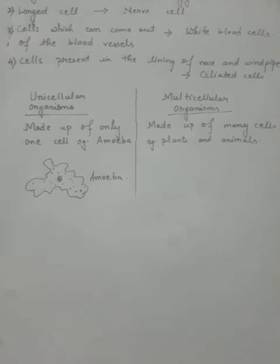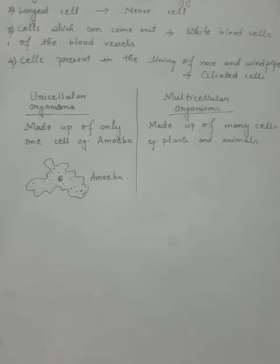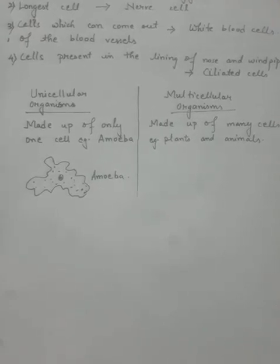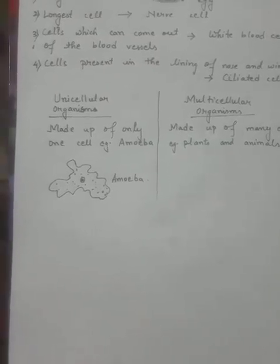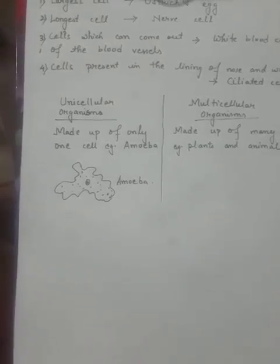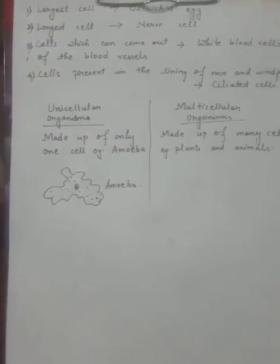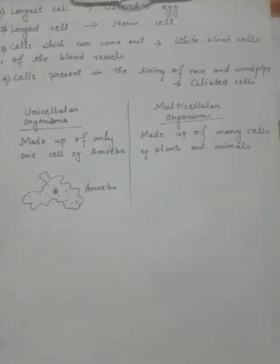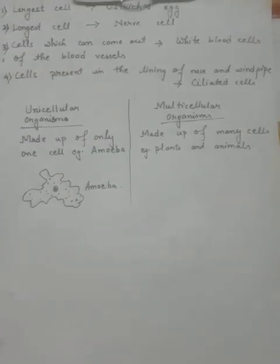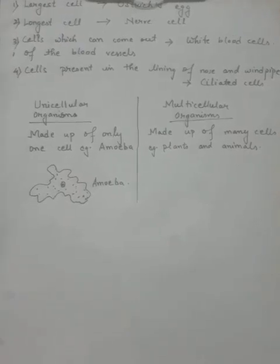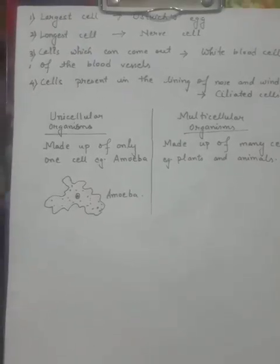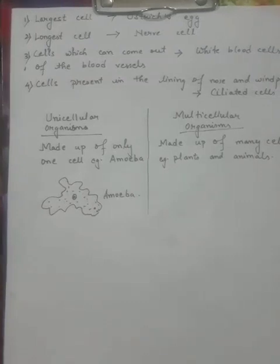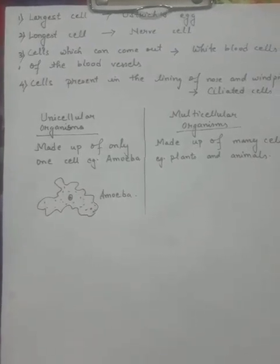Unicellular organisms are made up of only one cell — for example, amoeba. Multicellular organisms are made up of many cells — examples are plants and animals. Children, go through these notes and memorize the questions provided.